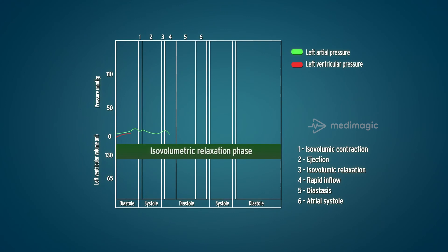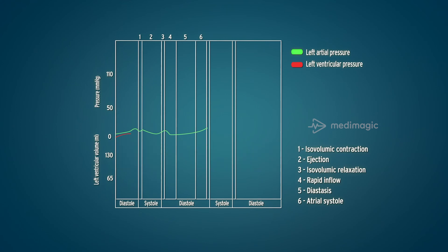During the isovolumetric relaxation phase, since the AV valves are closed, the atrial pressure gradually increases. During the rapid filling phase of the ventricles, when blood is pumped into the ventricles, there is a steep fall in the atrial pressure, paving the way for another cycle of atrial systole.